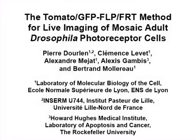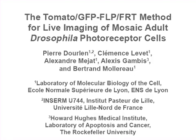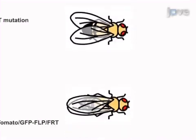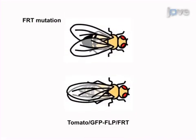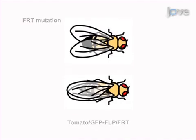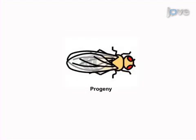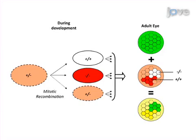The overall goal of the following experiment is to analyze the development and survival of mosaic photoreceptor neurons in the retina of living Drosophila. This is achieved by crossing a fly stock carrying a mutation recombined on an FRT chromosome with a tomato GFP-FLP-FRT stock. In the progeny, mosaic clones are generated by mitotic recombination during development.